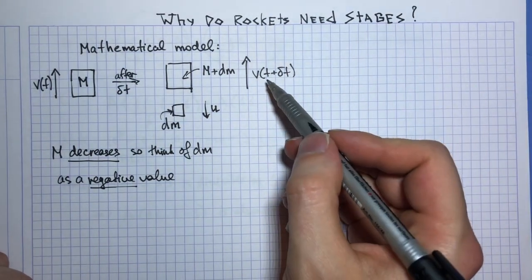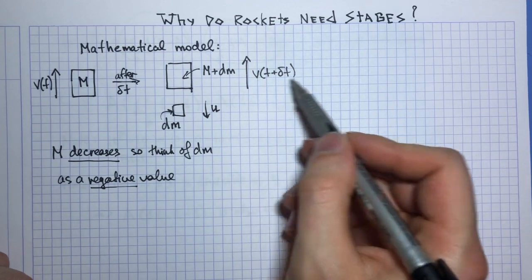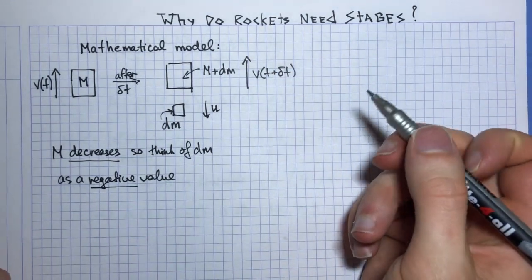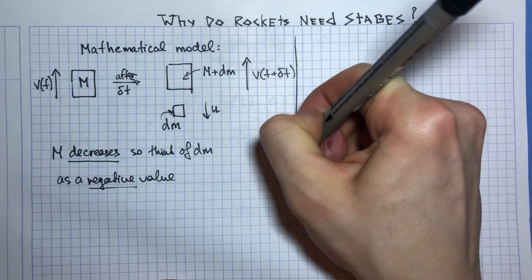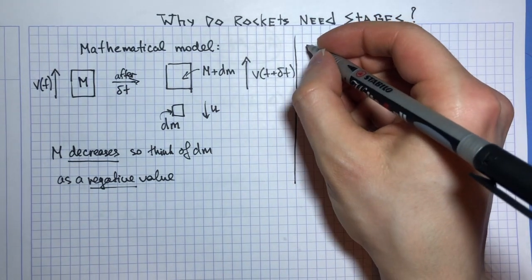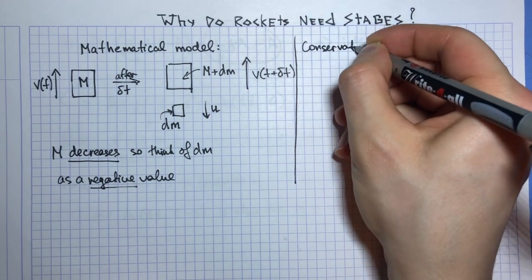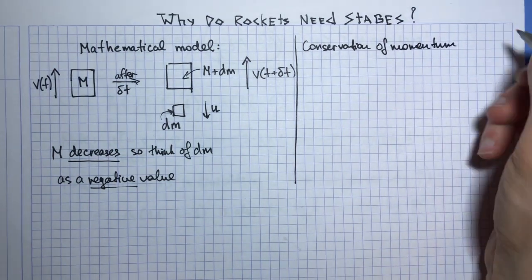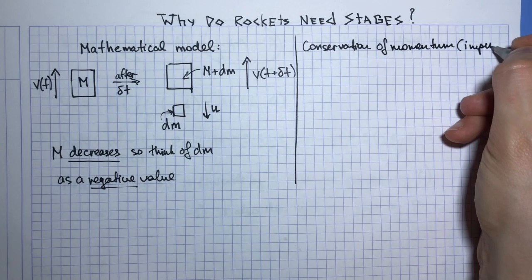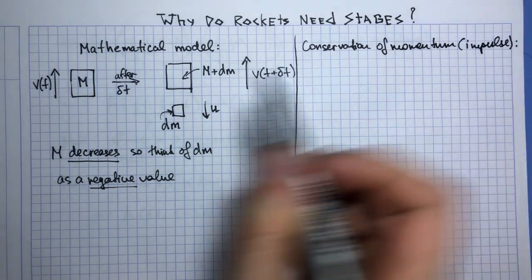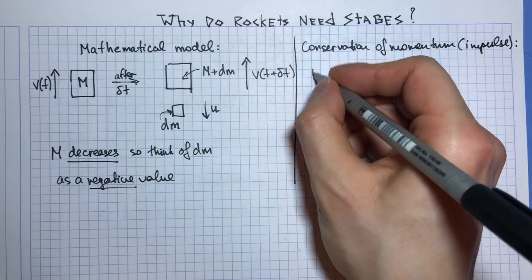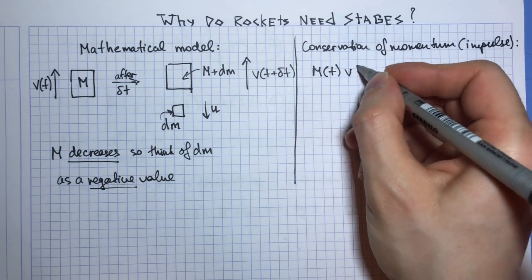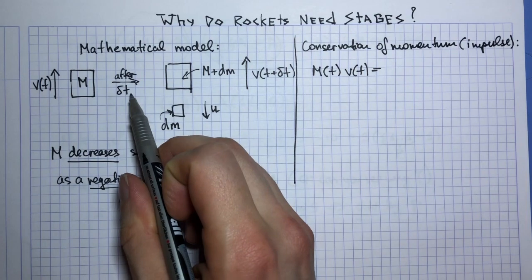And the idea is to find out an expression for speed in terms of all these variables and see how it grows. So now we use a principle from physics which is called conservation of momentum or impulse. So initially the momentum is M times v(t).